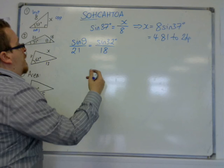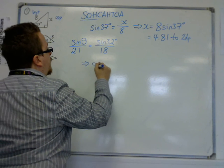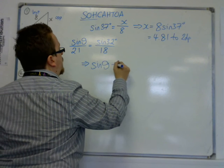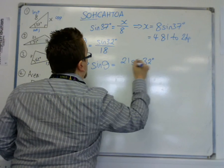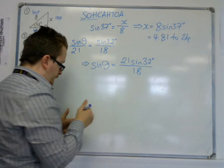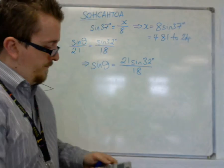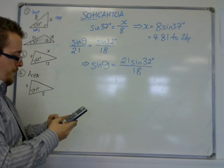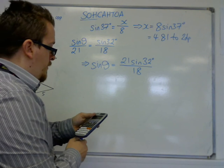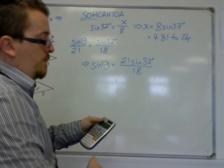Now, if you multiply through by the 21, you can get sine theta by itself. We have 21 sine of 32 over 18. So we plug that into our calculator. 21 times sine of 32, divide that by 18 and you get 0.618239.